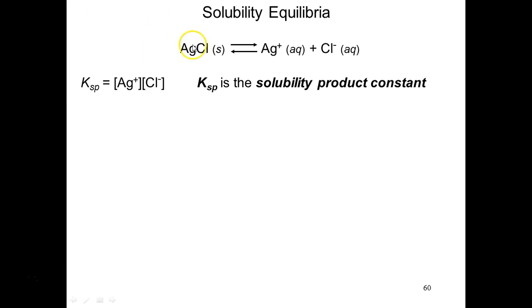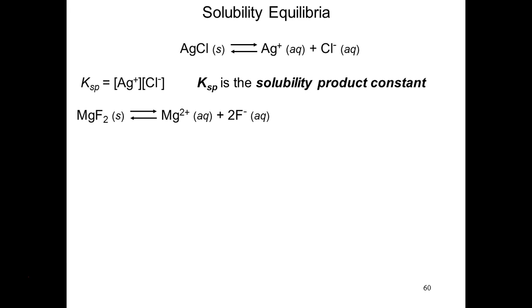For silver(I) chloride, it's a typically easy equilibrium expression to write because there are coefficients of one. One molar equivalent of silver(I) chloride yields one molar equivalent of silver-plus cations and one molar equivalent of chloride-minus anion. For magnesium fluoride, dissolution yields one equivalent of the cation but two equivalents of the anion, so the anion is raised to the second power in accordance with its coefficient in the balanced chemical equation.